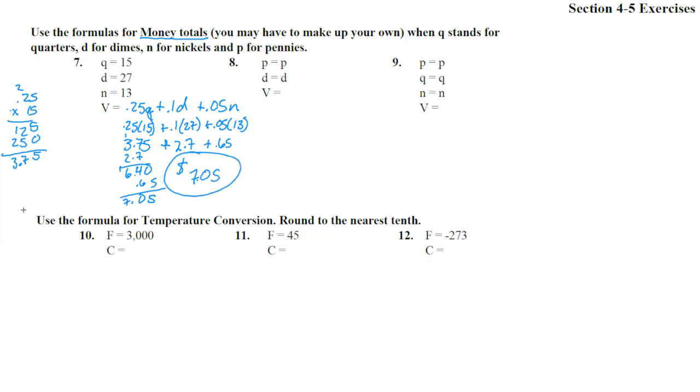Number 8. It's going to be 0.01 times the pennies, plus 0.1, 10 cents, times the dimes. And they didn't tell us what p and d were. We're kind of stuck with that formula. So there we have it.